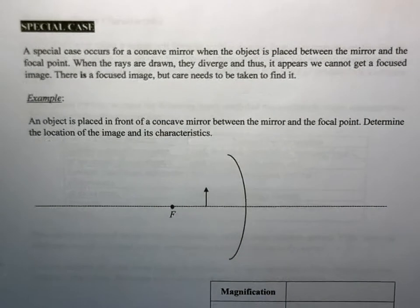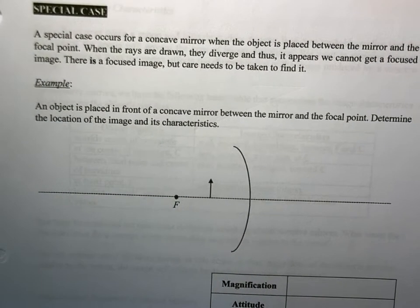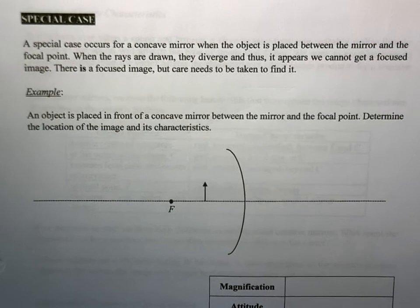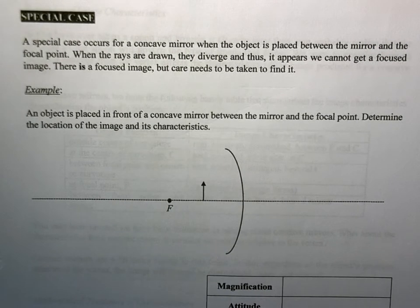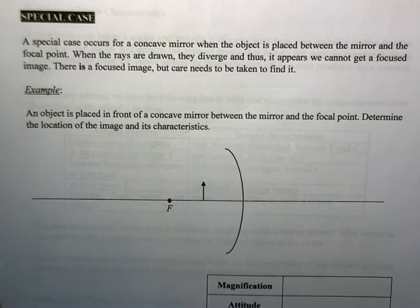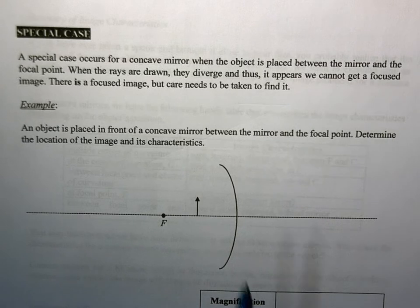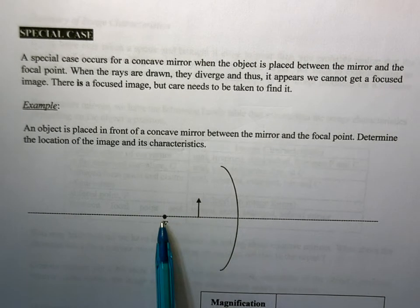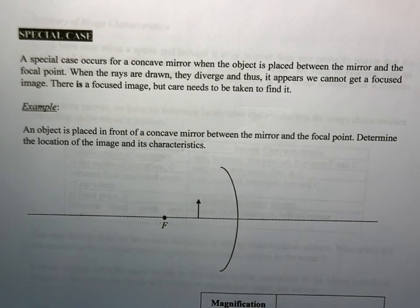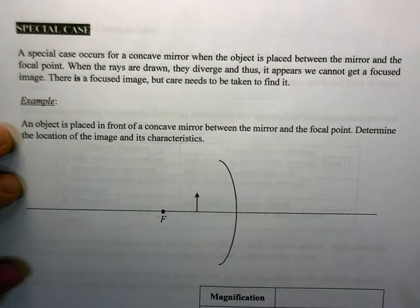All right, I said for concave mirrors students usually are really good at drawing the ray diagrams for them, but I said there's kind of one special case and this is one that gets put on the diploma quite a bit and it really gets students. So the special case is going to be when the object is located between the focal point and the mirror. That's a special case that requires a little bit of extra attention.